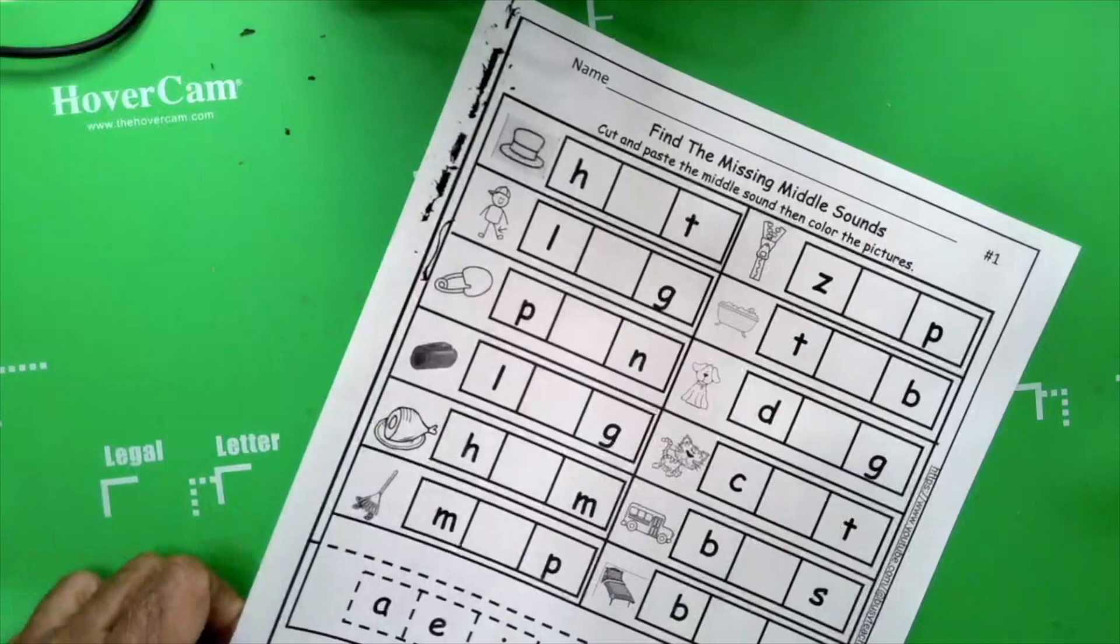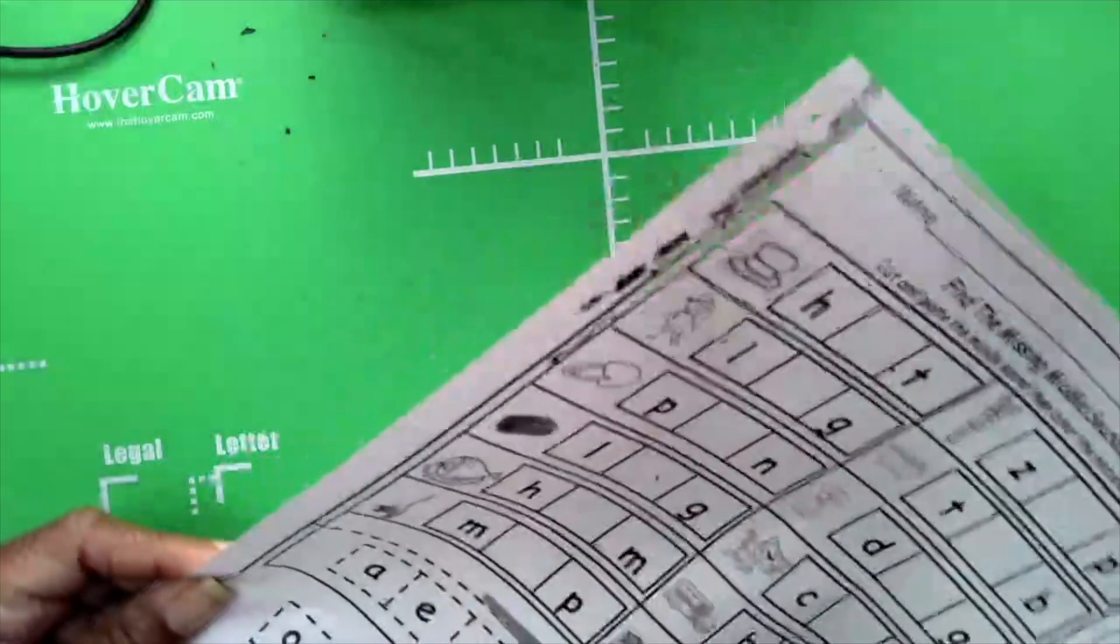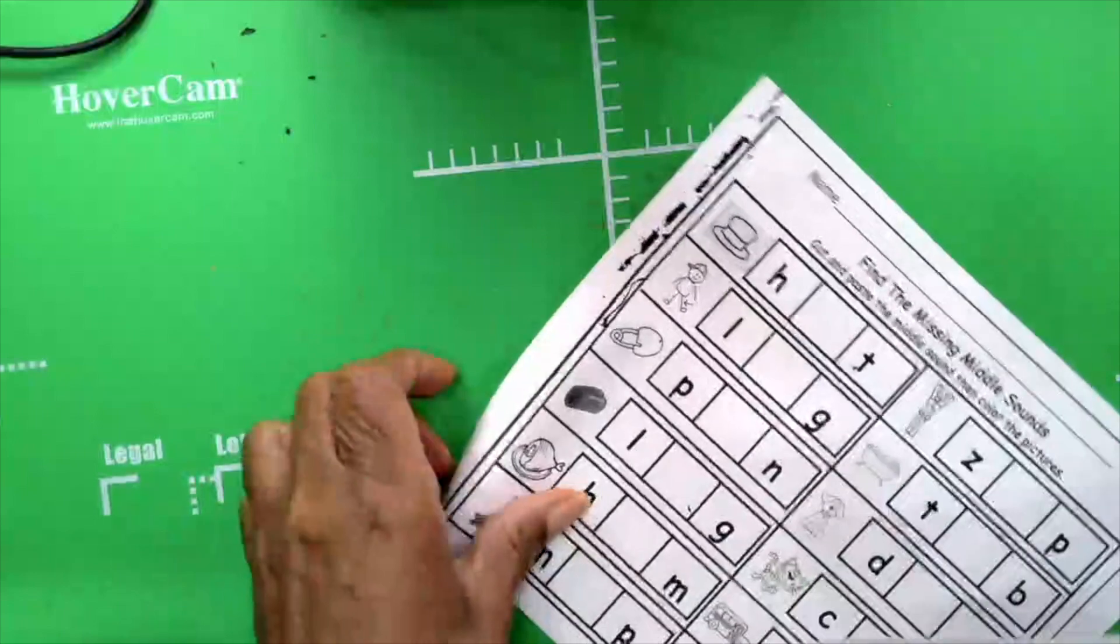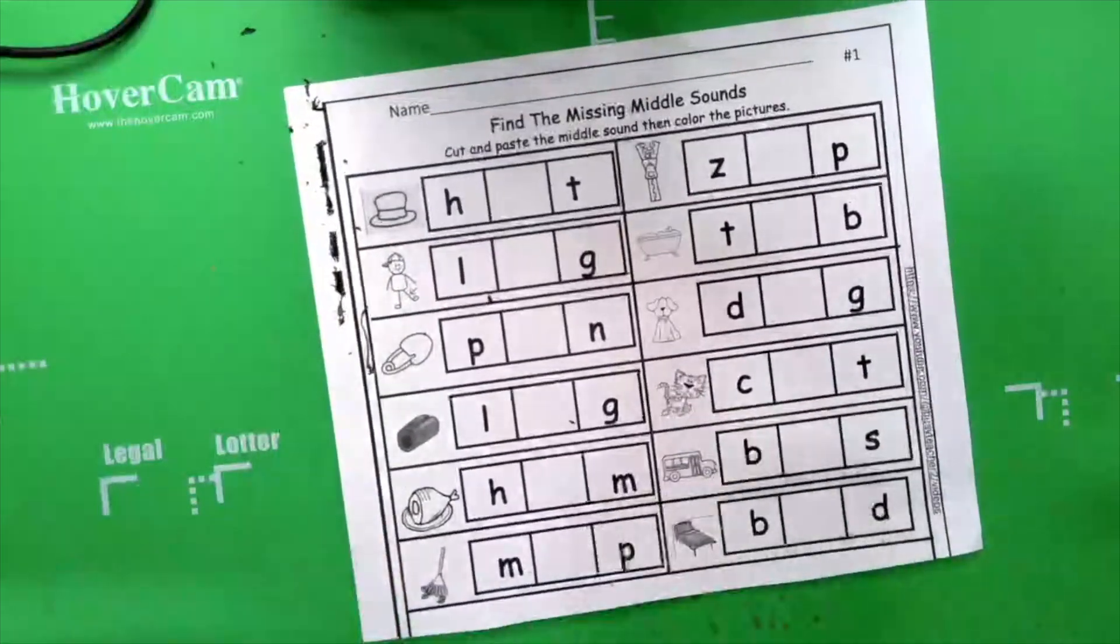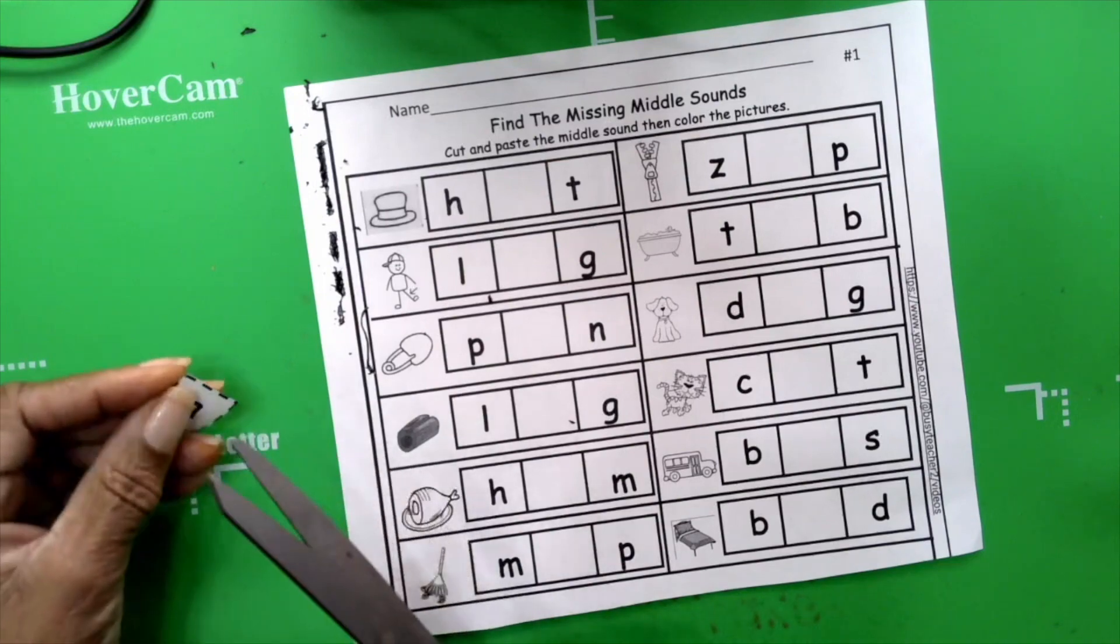Now, you're going to need your scissors. First thing we're going to do is we're going to cut out on the dotted line all the way across and we're going to cut out our letters. And if you've worked with me before, what is it that you know? Do you remember? Yes, I like to do all my cutting at once so that I'll have all my letters in front of me and I don't have to keep going back to cut. Cut once and you're done.